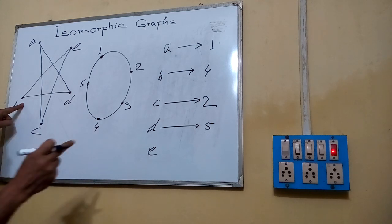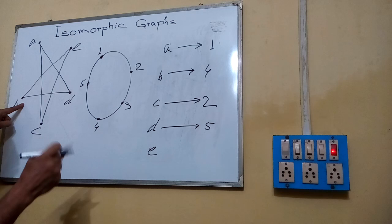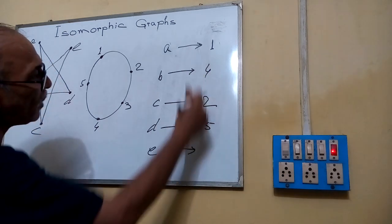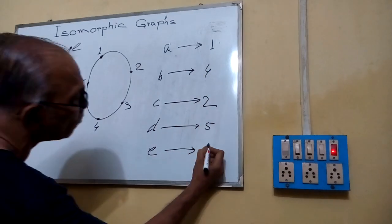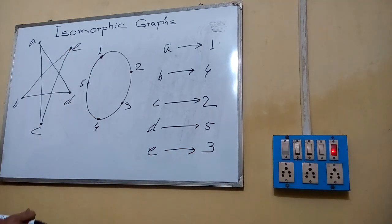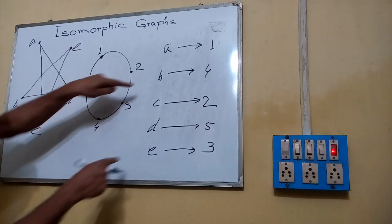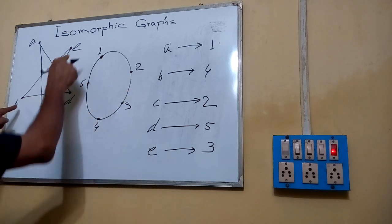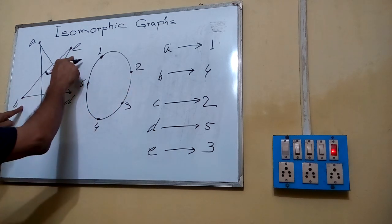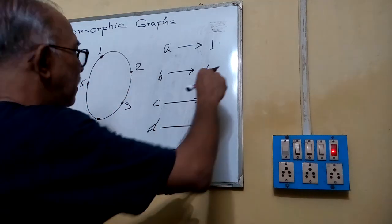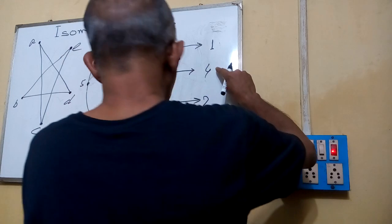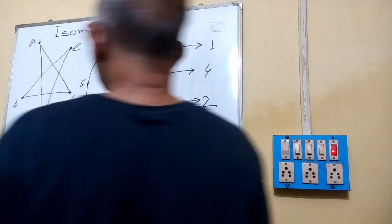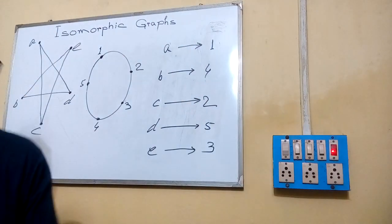For E, only one vertex is left: since 1, 4, 2, 5 are already used, 3 is left. So E corresponds to 3. Edge BE is present here, and edge 4-3 is also present there. So now we can verify all the correspondences.